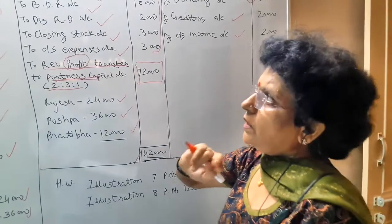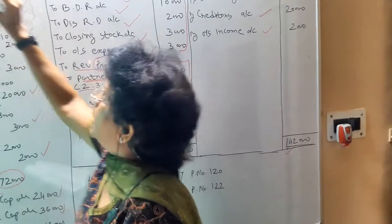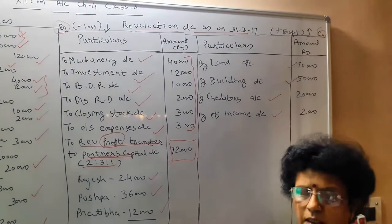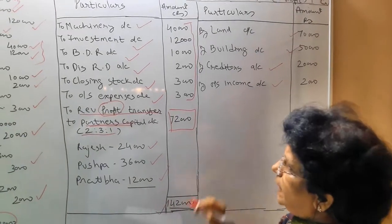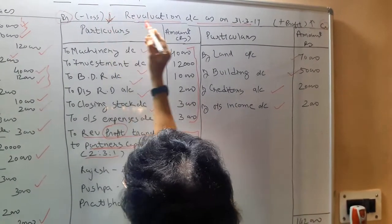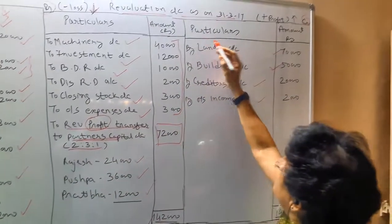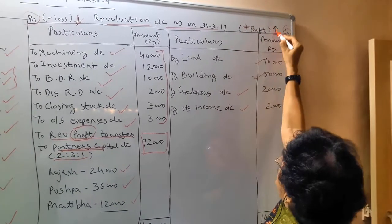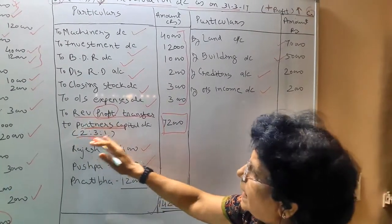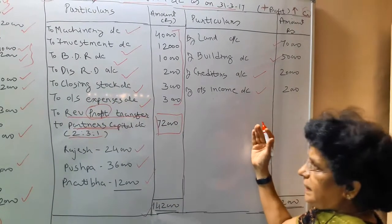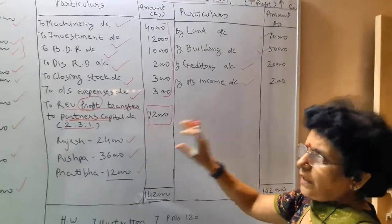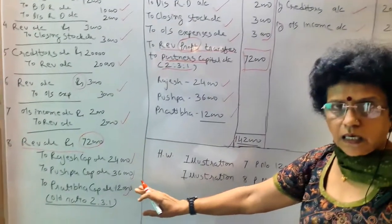So, what we have learned today: Number 1 — journal entries for revaluation account. Number 2 — how to prepare the revaluation account, which is also known as the profit and loss adjustment account; remember this for your MCQ. Number 3 — when there are probable losses, a decrease in the value of an asset, or an expense, we write on the debit side of the revaluation account. When there are probable profits or an increase in the value of an asset, that is written on the credit side. If the difference comes on the debit side, that is known as profit. If the difference comes on the credit side, that is a revaluation loss. The profit or loss is ultimately transferred to the capital account.